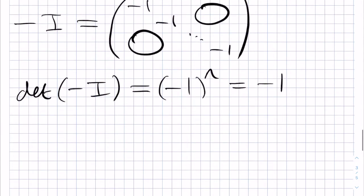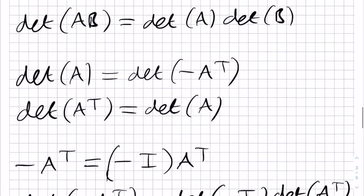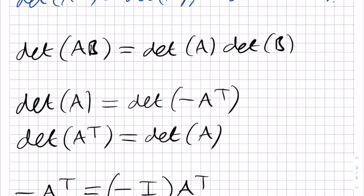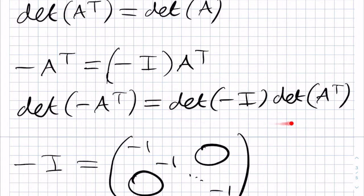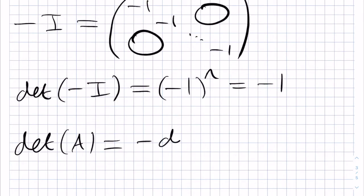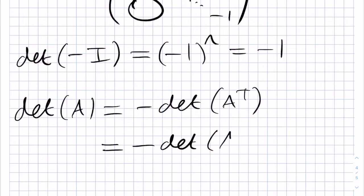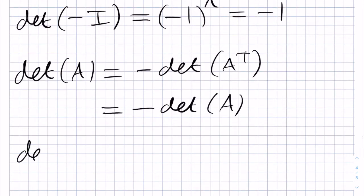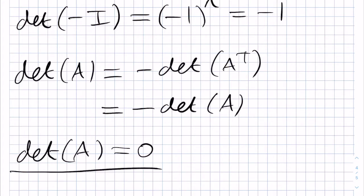This tells us that the determinant of A is equal to det of minus I times det of A transpose. Since det of minus I is minus 1, we have minus det of A transpose. But we were told that det of A transpose equals det of A, so this is minus det of A. The only number equal to minus itself is 0, and therefore the determinant of A must be 0.